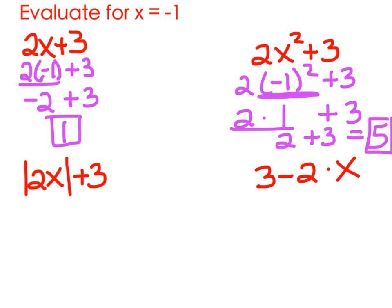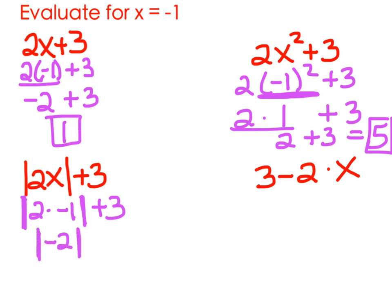The next one is the absolute value of 2x plus 3. So we have the absolute value of 2 times negative 1 plus 3. We treat absolute value bars the same way as parentheses, so we do what's inside first. 2 times negative 1 is negative 2, so we have the absolute value of negative 2 plus 3. The absolute value of negative 2 is positive 2, so 2 plus 3 equals 5.